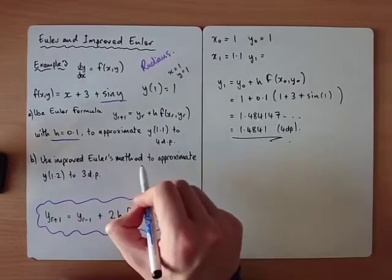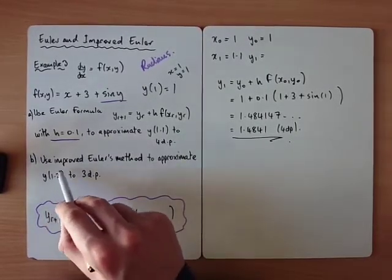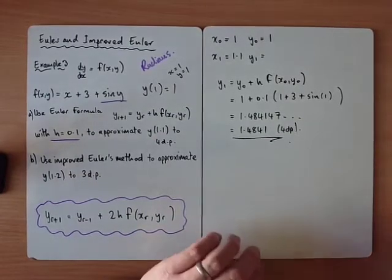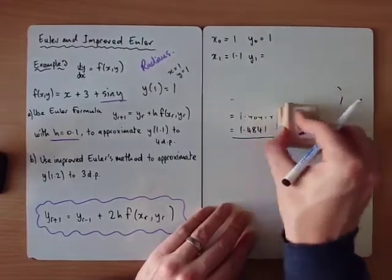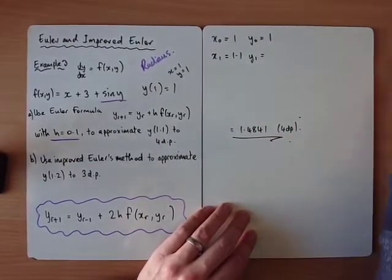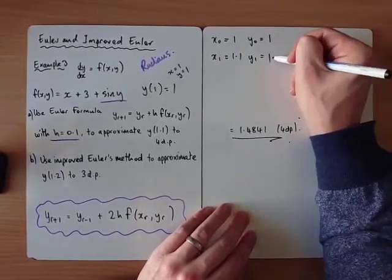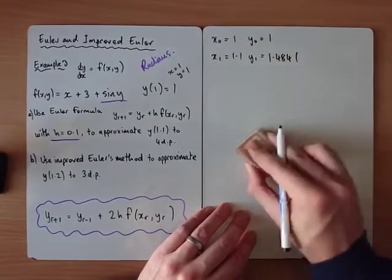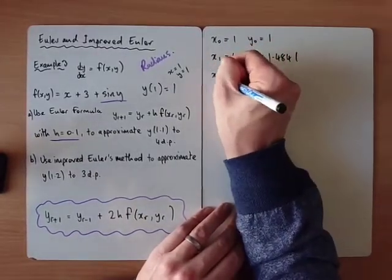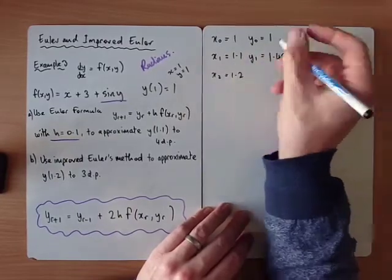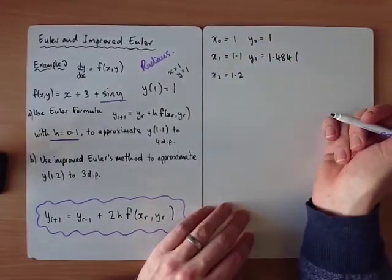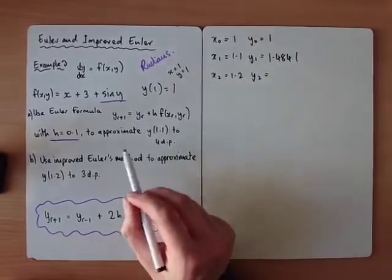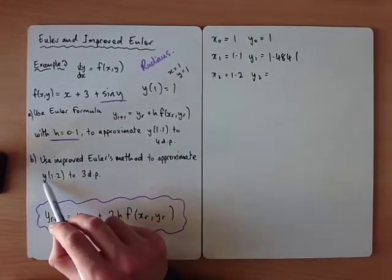OK, now we need to use the improved Euler method, and we want to figure out, well, if x is equal to 1.2, what does y equal? I'm just going to rub this off to give me a little bit more space. So, so far we know, if x is equal to 1.1, y is equal to 1.4841. I would recommend you set that up like this, so you can keep track of which values represent which x values correspond to which y values. And we're trying to figure out, if x equals 1.2, what does y equal?